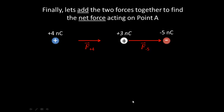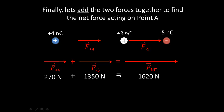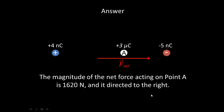Finally, let's add the two force vectors to find the net force acting on point A from both particles. F of plus 4 plus F of minus 5 equals F net: 270 newtons plus 1350 newtons equals 1620 newtons. So the answer to this problem is that the magnitude of the net force acting on point A is 1620 newtons, directed towards the right.